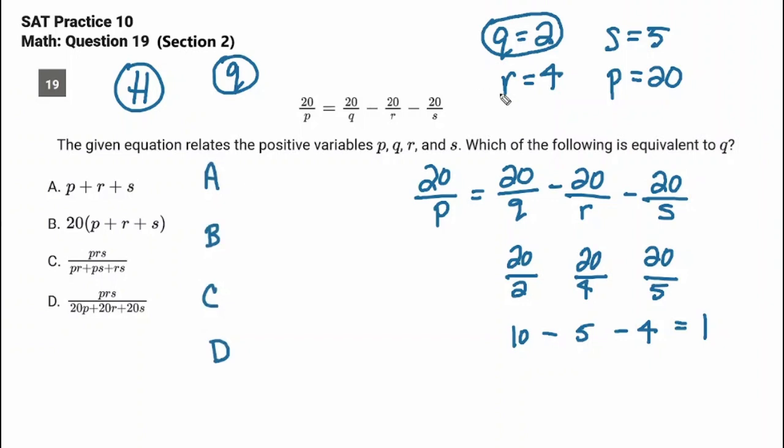P plus R plus S, that's 20 plus 4 plus 5, that's 29. Nope, that is not 2, it's gone. 20 times 29. No, that's just some big thing that's gone.